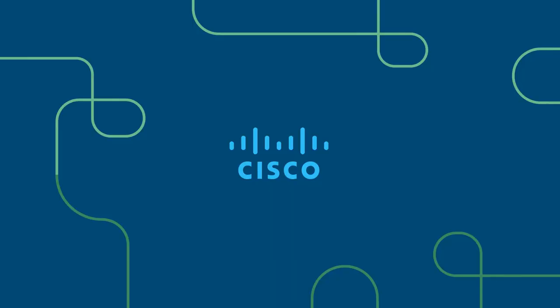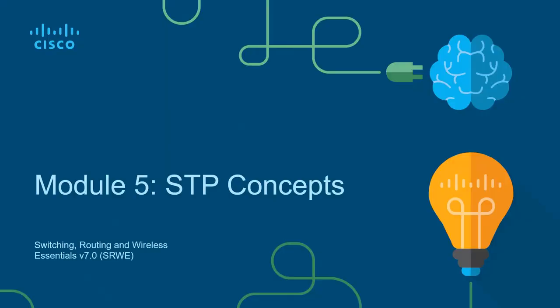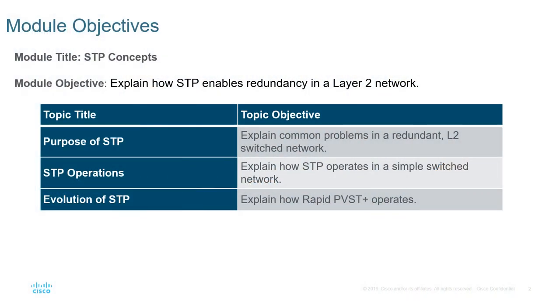Welcome to my Switching, Routing, and Wireless Essentials course. This should be the CCNA version 7 curriculum — the second of three courses. Welcome to lesson 5, STP Concepts. This is Spanning Tree Protocol. In this lecture, we're going to be looking at the purpose, the operation, and the evolution of Spanning Tree Protocol.